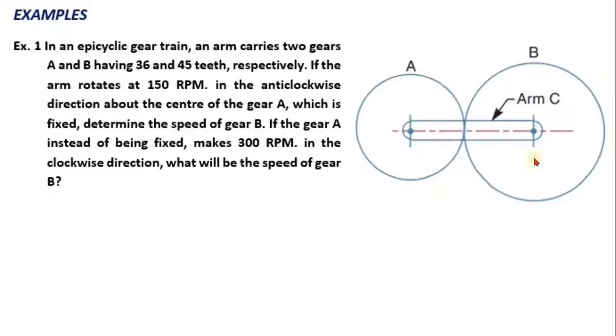So first step is to note down the given statement. So number of teeth on gear A, number of teeth on gear B, speed of arm C in this case is given. So now let us start with our tabulation procedure.